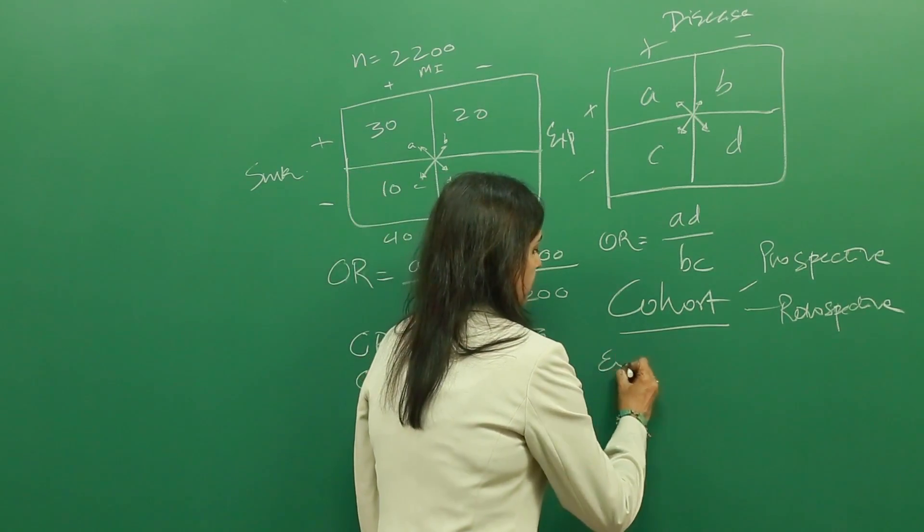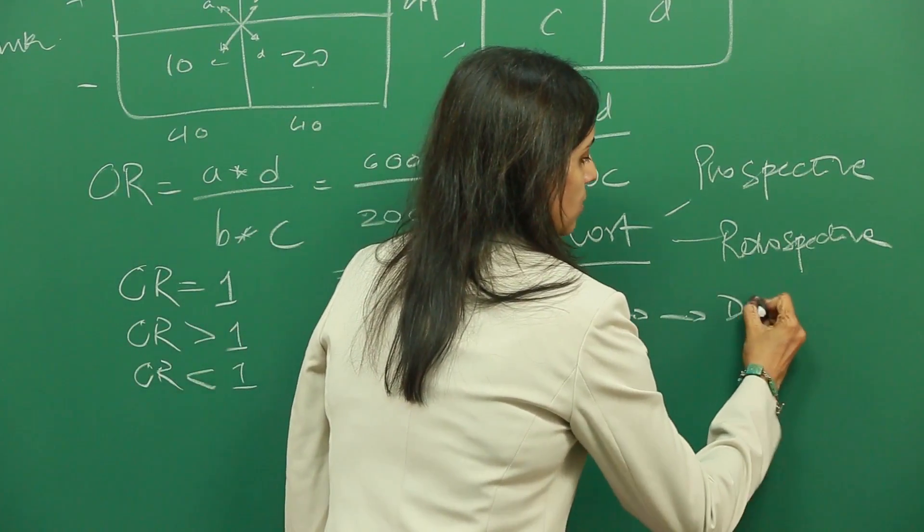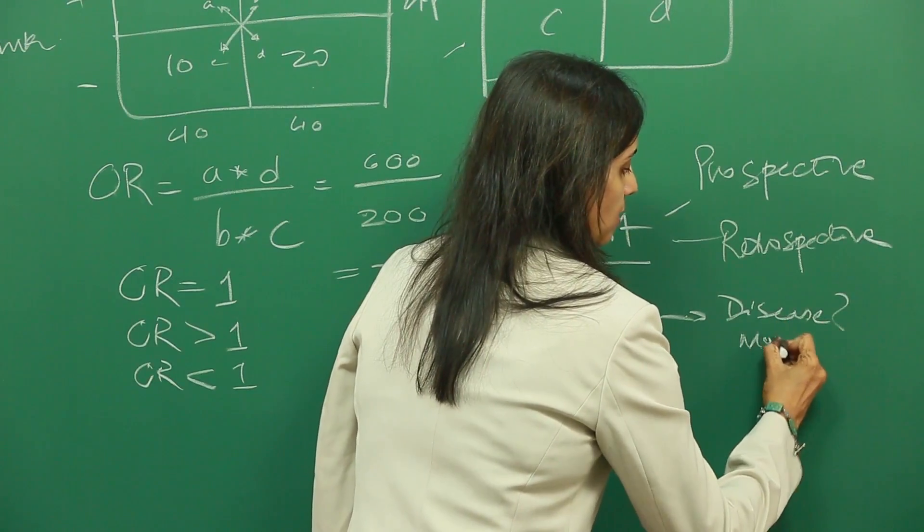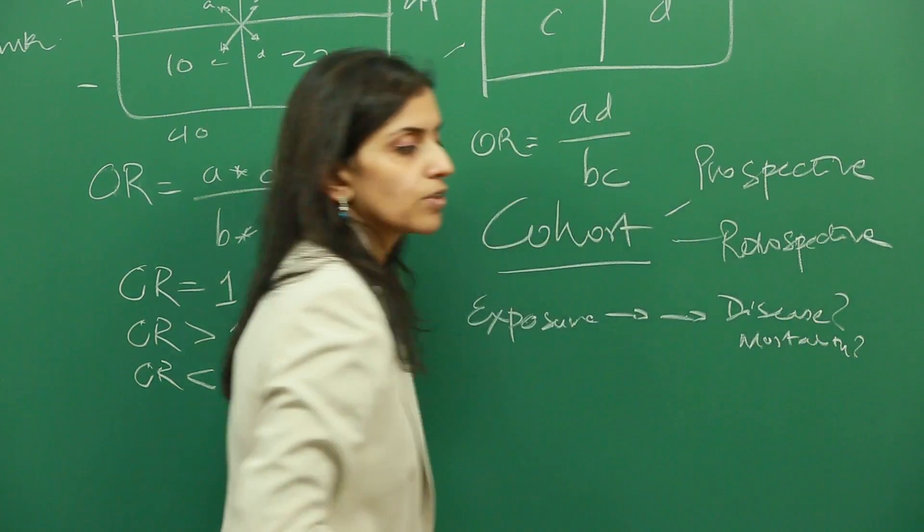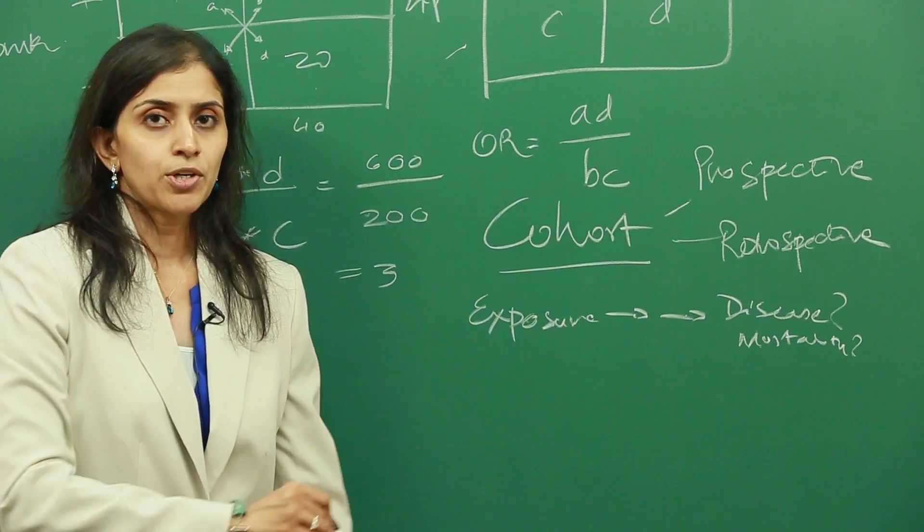In a cohort study, you start with an exposure, and then you follow it over time to see what happens. Whether it's a disease, whether it's death, whatever the outcome may be. We always, in a cohort study, start with an exposure.